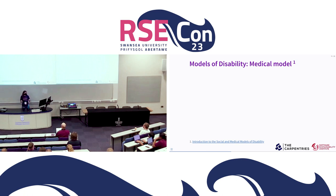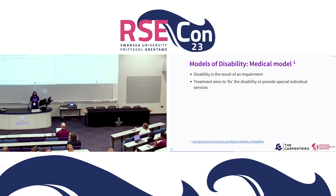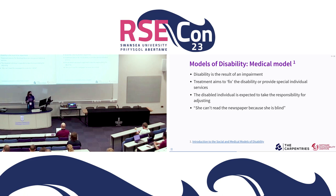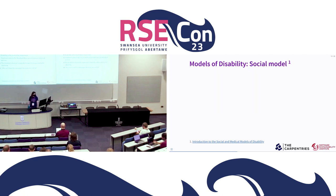I want to talk about two models of disability — ways that you can think about disability. The first is the medical model. Under the medical model, disability is the result of an impairment. Any treatment is focused on fixing or maybe curing the disability, or providing special individual services — special schools or specific patient transport schemes. The disabled individual is typically expected to take responsibility for adjusting to their disability, making their own accommodations so they can do certain things. A statement you might hear under this model would be: 'she can't read the newspaper because she is blind.' This model is quite prevalent in society, but I want to present a model that runs counter to this — the social model of disability.